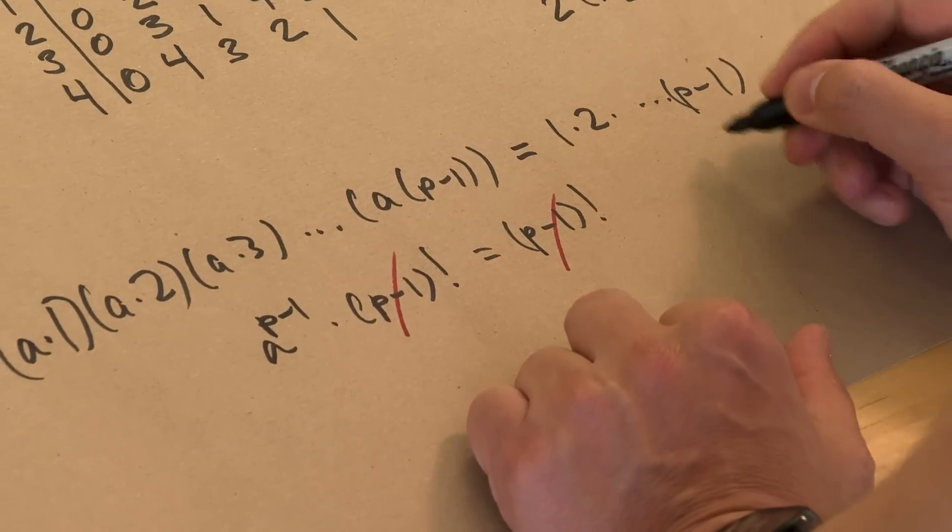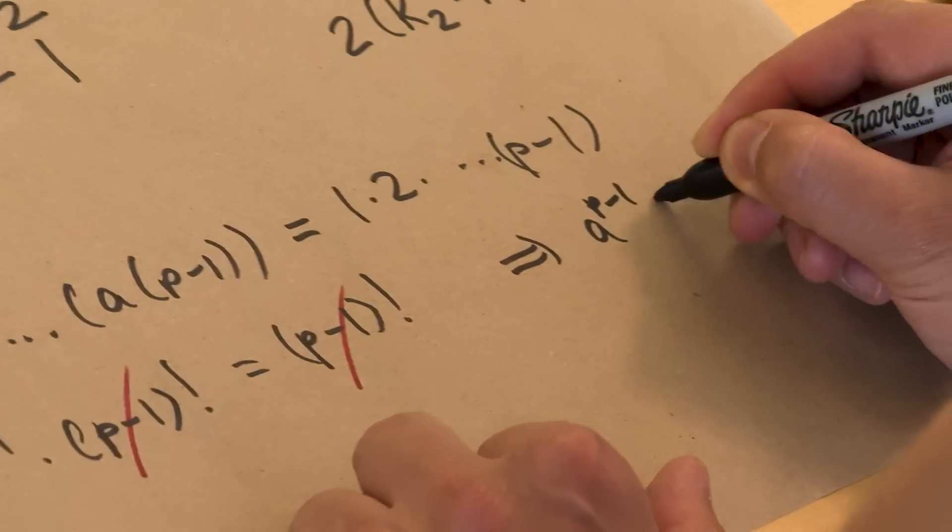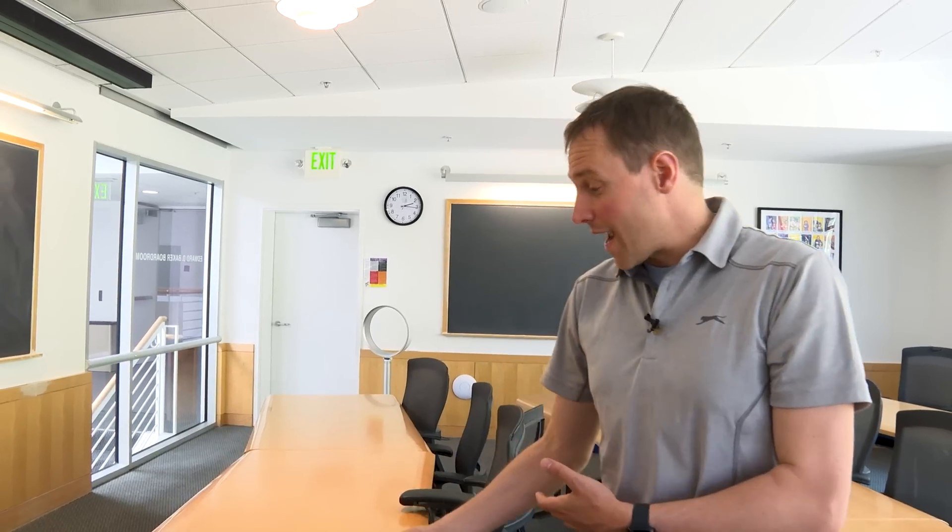This gives me that for any nonzero element A, I have A to the P minus 1 is the same thing as 1 mod P on this clock. And so now, if I multiply both sides by A, I'll get A to the P is the same thing as A.